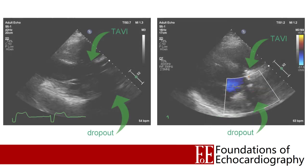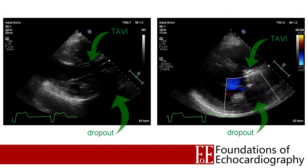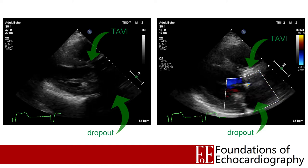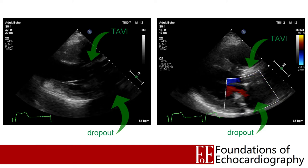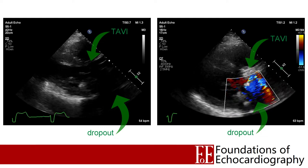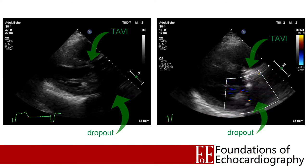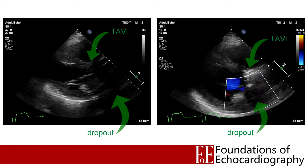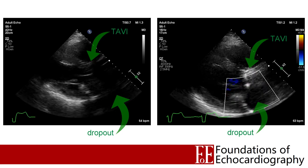Now that we have a basic understanding of how colour Doppler is generated, we can start to consider some of the limitations of this tool. First of all, all of the data that the ultrasound software uses to generate your colour map comes from returning ultrasound signal. So any of the factors that are going to diminish the quality of your 2D ultrasound image — such as body habitus, patient position, and dropout caused by acoustic shadowing — are all going to impair the quality of the data the software gets back and impair its ability to produce a colour map for you.